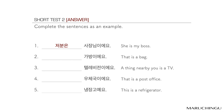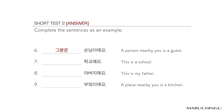1번: 저분은 사장님이에요. 2번: 저거는 가방이에요. 3번: 그거는 텔레비전이에요. 4번: 저곳은 우체국이에요. 5번: 이거는 냉장고예요. 6번: 그분은 손님이에요. 7번: 이곳은 학교예요. 8번: 이분은 아버지예요. 9번: 그곳은 부엌이에요.